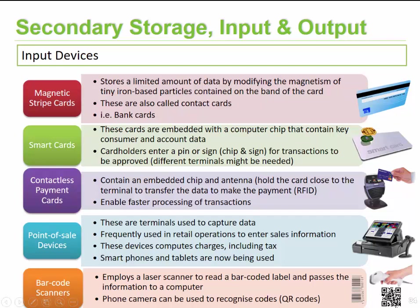Another example commonly found on mobile phones is QR codes. Using your phone's camera, you take a picture of a QR code, it recognizes what's embedded in that code, and it either links you to a website, a link, or other content embedded or linked to that particular code.